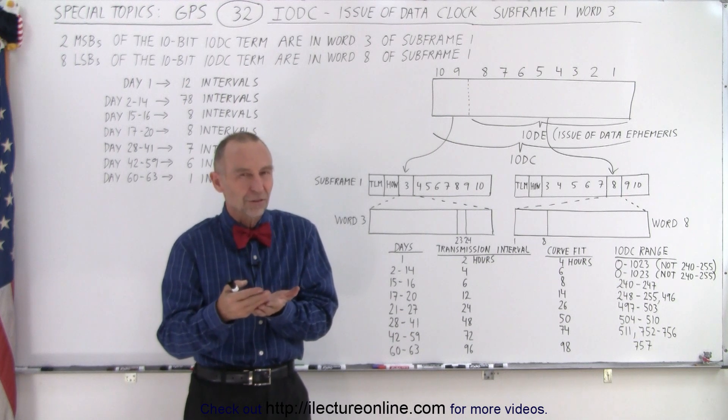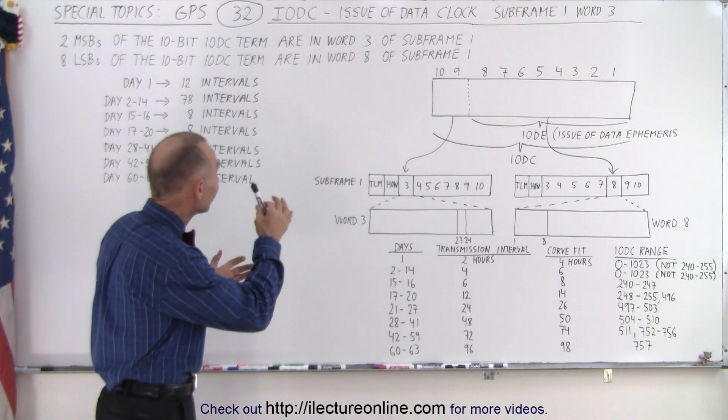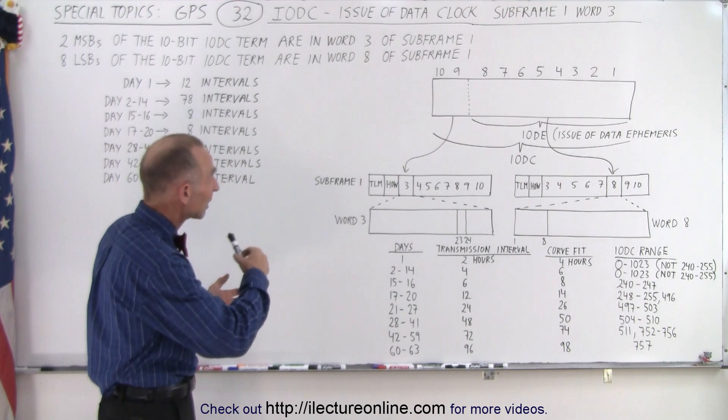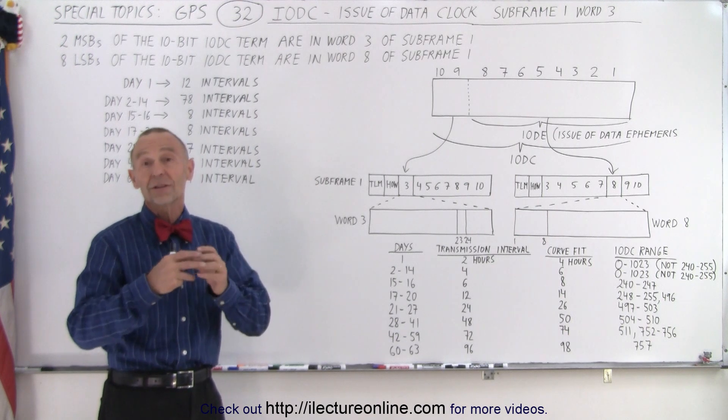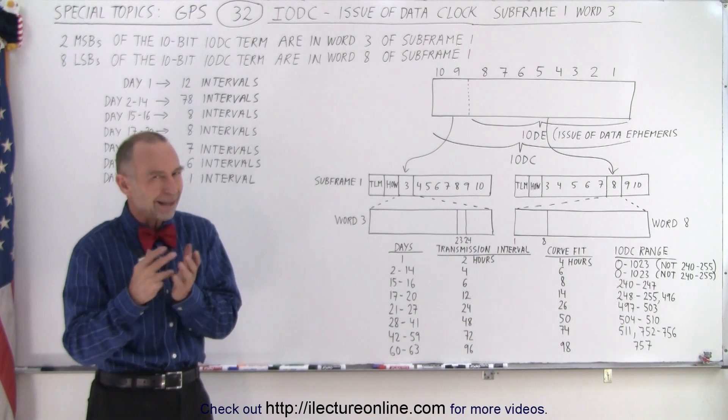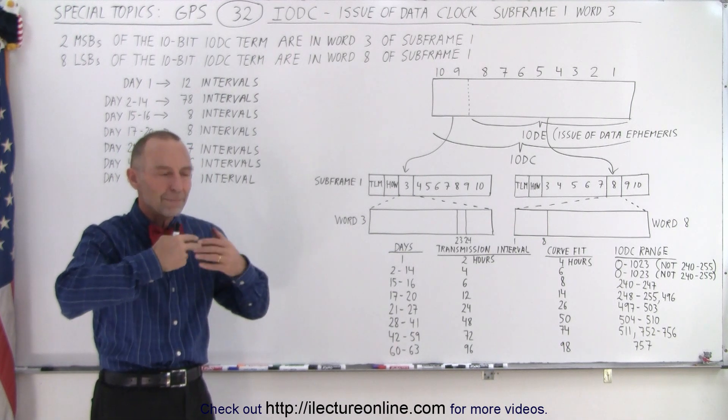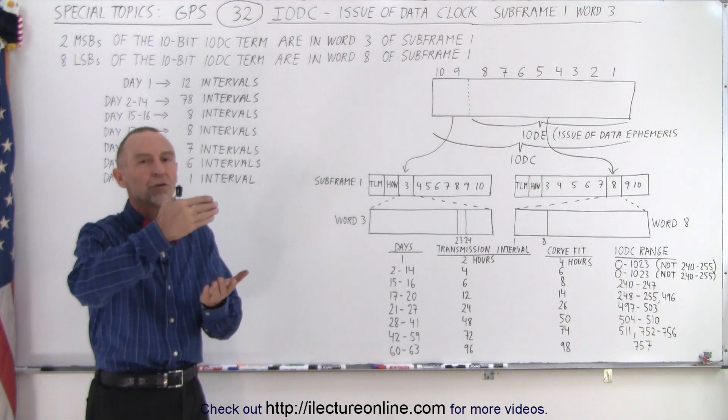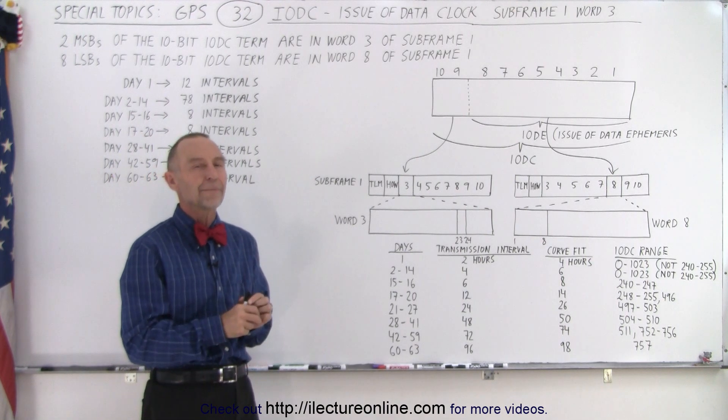And so there's a numbering system. And this is where the title of that information, the IODC, which stands for the Issue of Data Clock. The word clock is kind of misgiving, so to speak, because then you're expecting some sort of time, but it's not time at all. It is actually the number and it's numbered. So the messages are numbered and you use the first one, then the second one, then the third one and so forth. And that information is contained in the IODC.